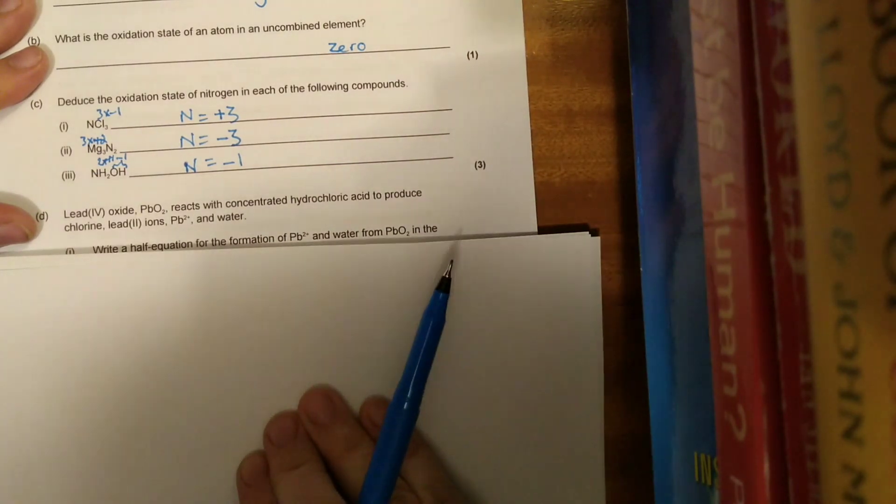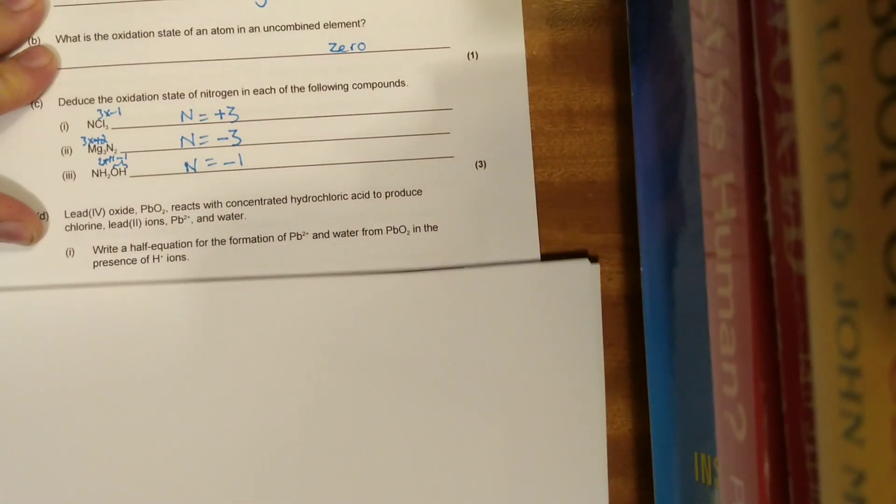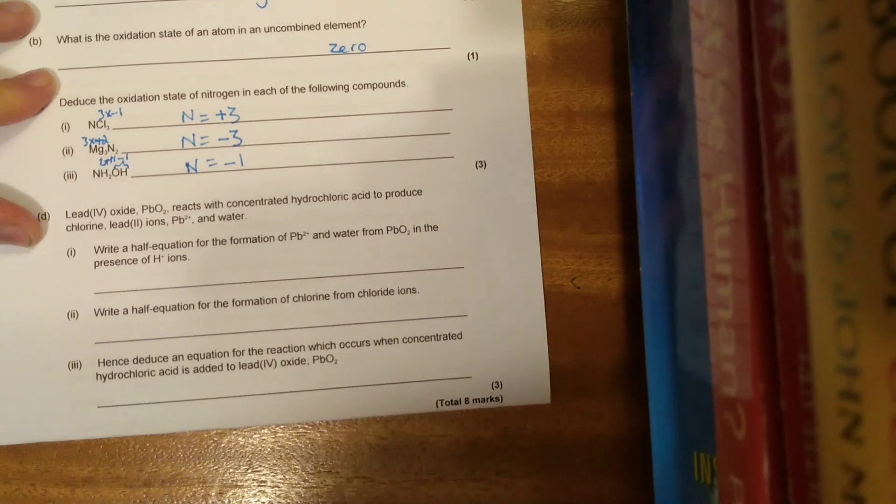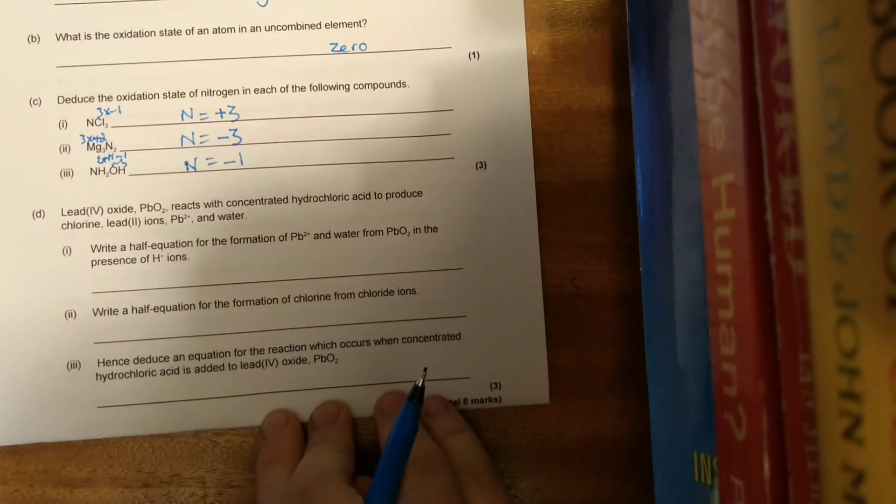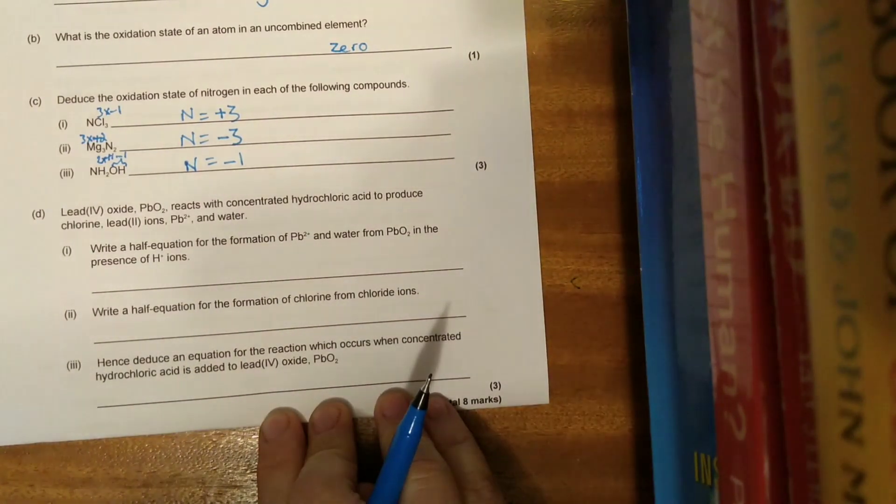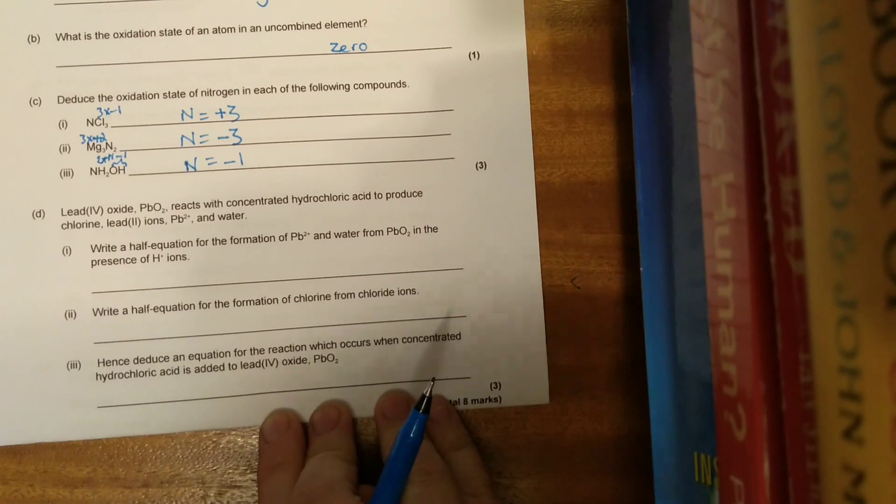And then we've got this combination here. It looks a bit scary to start off with, but break it down. Hydroxide minus 1, hydrogen plus 1, we've got two of those. So the nitrogen must be minus 1 to give an overall state of zero.